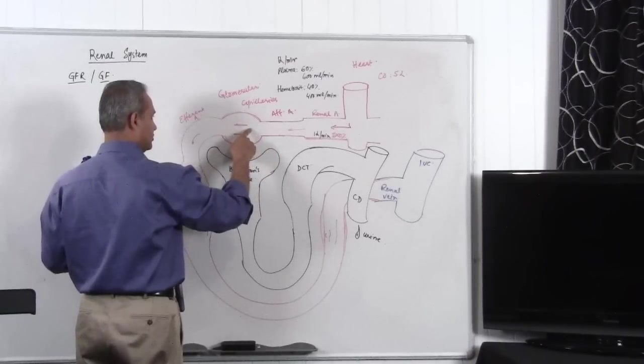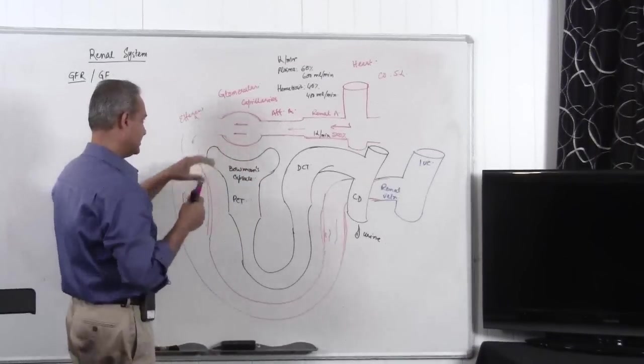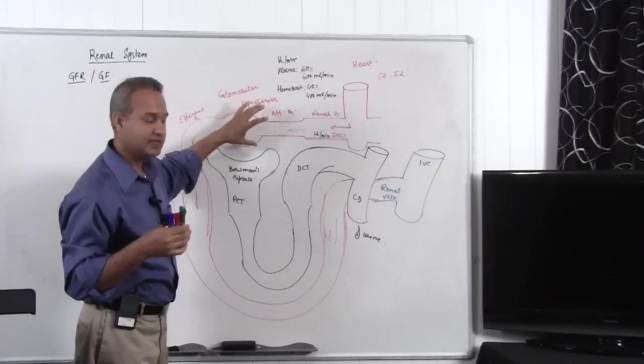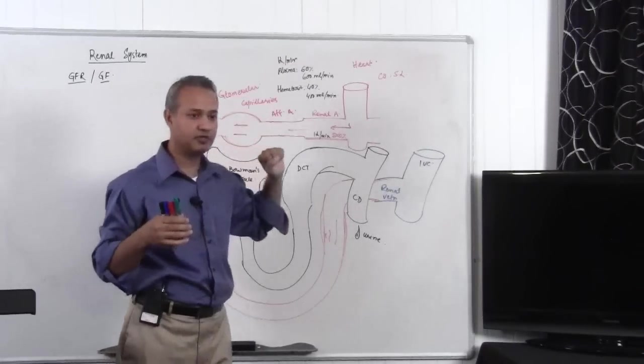From the afferent arterioles, the blood passes through the glomerulus. Glomerulus itself is nothing but the capillary meshwork here. This capillary meshwork is actually if you think about it, the meshwork is sitting like this.